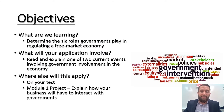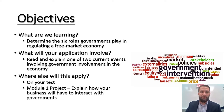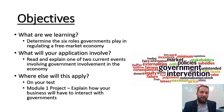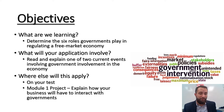Our objectives for this video and this lesson: first, we will determine the six roles that governments play in regulating a free market economy. Second, you will be asked to do an application later where you will read and explain one of two current event articles involving government involvement in the economy. Finally, this will apply to your module one test and your module one project, where you will be asked to come up with your own business idea and explain how that business will have to interact with governments.